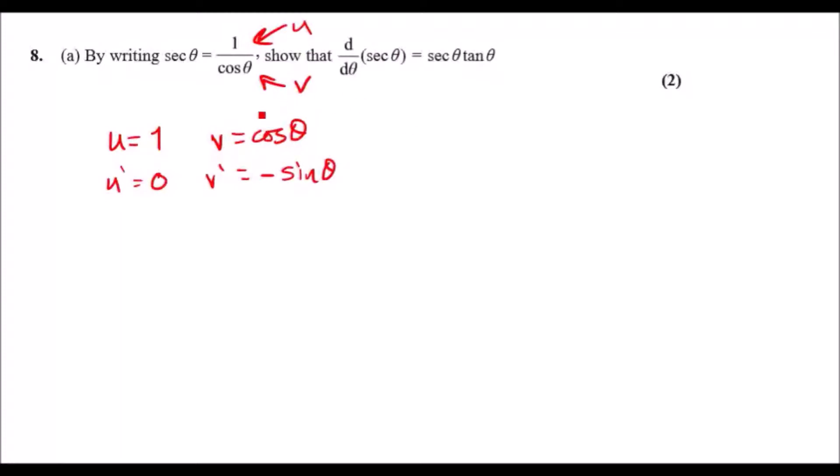Now to use the quotient rule you simply look at both the products: v times u prime minus u times v prime, all over v squared. So therefore the solution is going to be d over dθ.